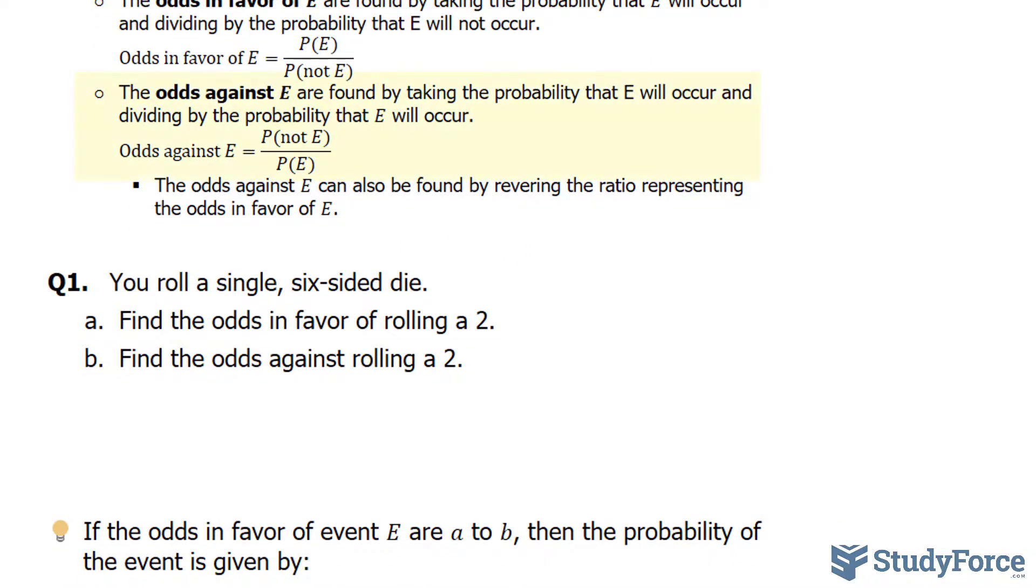Similarly, the odds against E are found by taking the probability that E will occur and dividing by the probability that it will not. Let's start with an example.